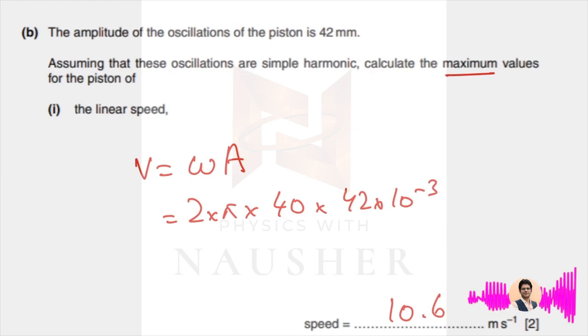Next part, amplitude is given, and then what do you find? Maximum values. Maximum speed formula: omega A. Omega is 2 pi f. Frequency you found out to be 40, and the amplitude is 42 milli to convert into meters, and you get 10.6 meters per second.